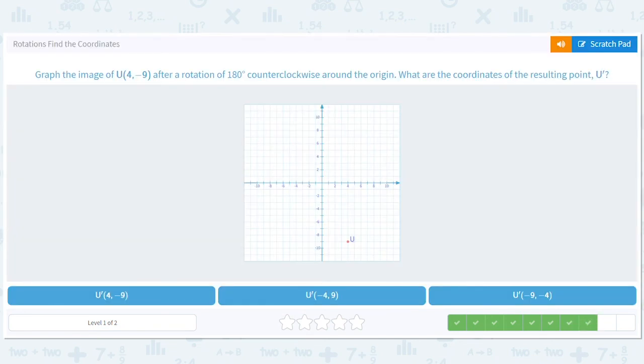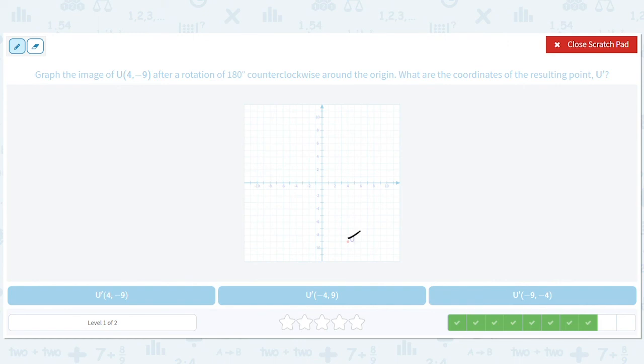4, negative 9, 180 degree counterclockwise rotation. We'll go this way. And we'll go to negative 4, positive 9.